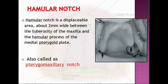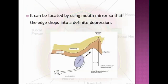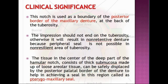The hamular notch is a displaceable area about 2 mm wide between the tuberosity of the maxilla and the hamular process of the medial pterygoid plate. It is also called the pterygo-maxillary notch and can be located using a mouth mirror so that the edge drops into a definitive depression. Its clinical significance is that this notch is used as the posterior boundary of the maxillary denture.